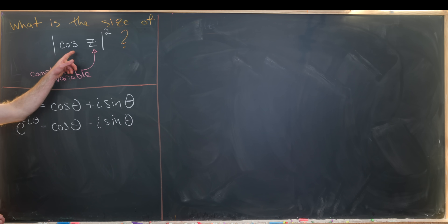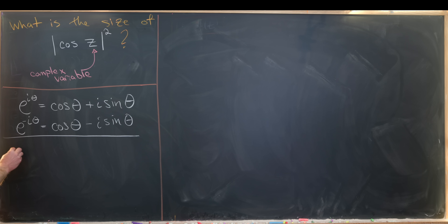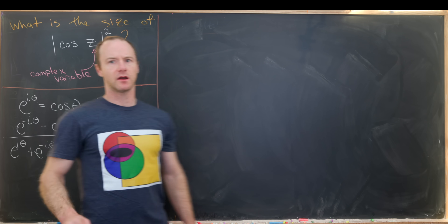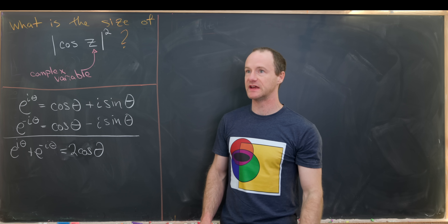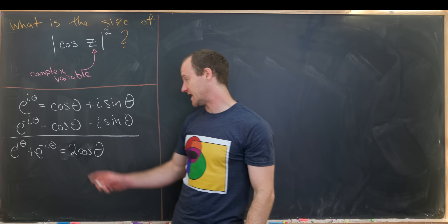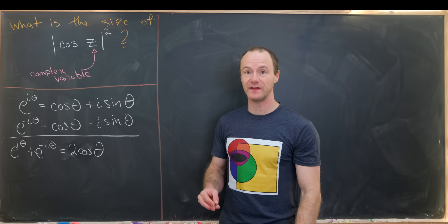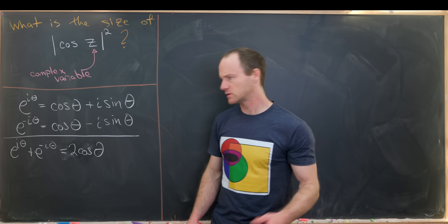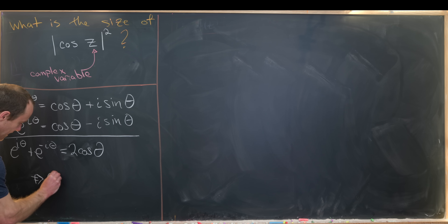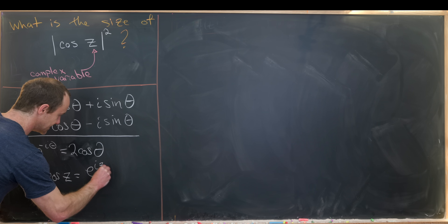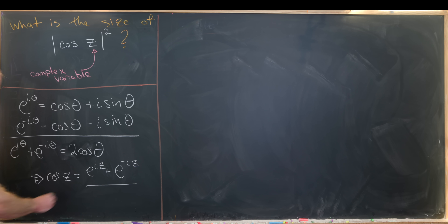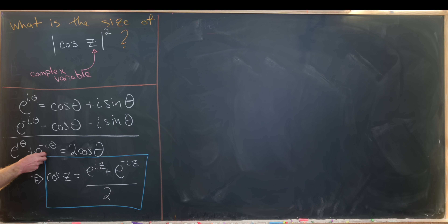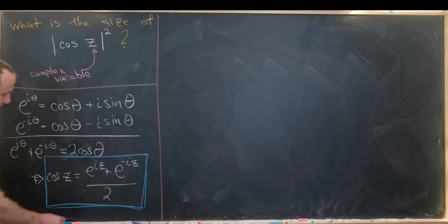Since we want to solve for cosine, we add the two equations: e to the iθ plus e to the −iθ equals 2 times cosine θ. While doing this calculation we're assuming θ is a real variable, but now we can plug in θ as a complex variable z and make meaning out of cosine of z, because we know the meaning of e to a complex number. So cosine of z equals (e to the iz plus e to the −iz) divided by 2, replacing the real angle θ with the complex variable z.